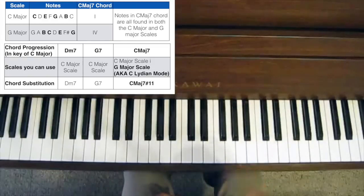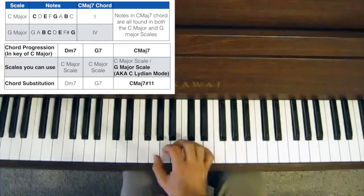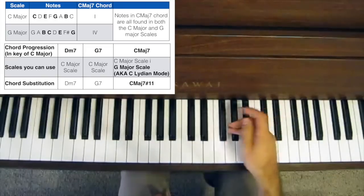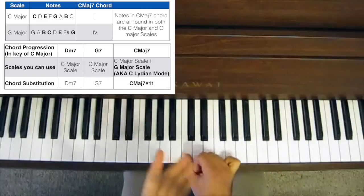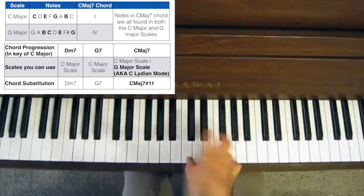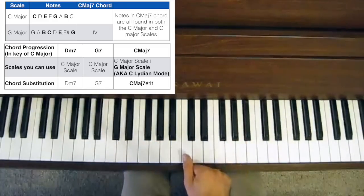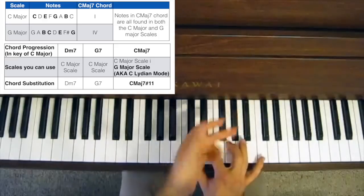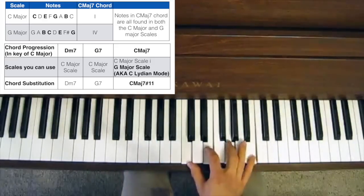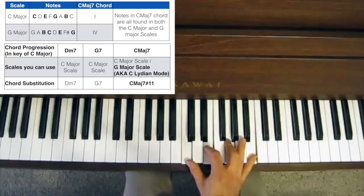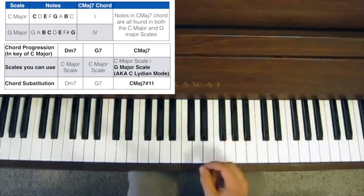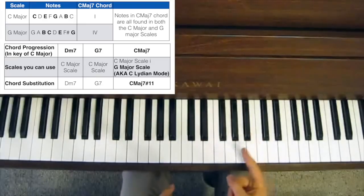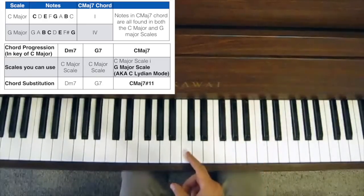The C major 7 can also be derived from a G major scale, which has one sharp — the F sharp. The C major 7 chord will be the 4 chord from the point of view of the G major scale or key. Starting on the C, we build up in thirds, we get to the E, we skip the F sharp because we're building in thirds, get to the G, get to the B. And again, we've got that C major 7.